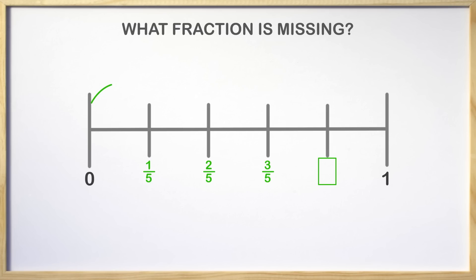We count one-fifth, two-fifths, three-fifths, four-fifths. We have gotten to the missing fraction. What is it? Four-fifths. The missing fraction is four-fifths. Amazing!